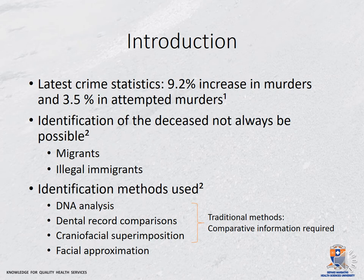The latest crime statistics released by the South African Police Force indicated a 9.2% increase in murders in the third quarter of 2021. Due to the history of socio-economic disparities and migrant labour, identification of murder victims poses a challenge as remains often originate from migrants or illegal immigrants. Forensic scientists assist the SAPS to create a biological profile to assist in the identification of the deceased when traditional methods prove to be unsuccessful.